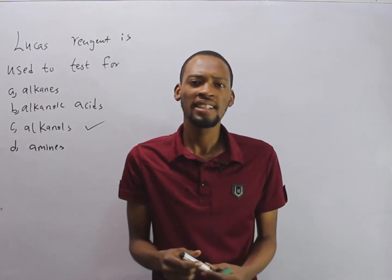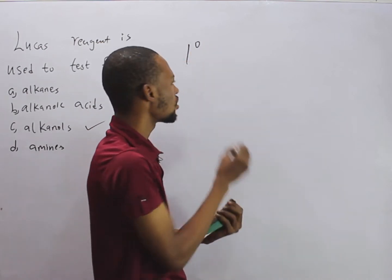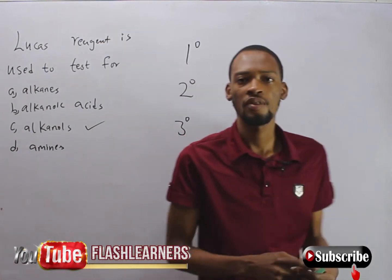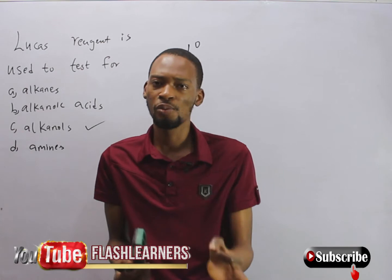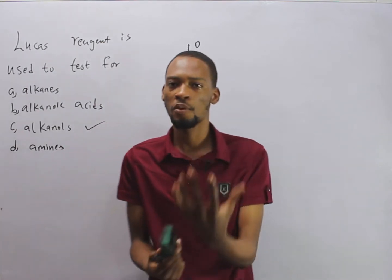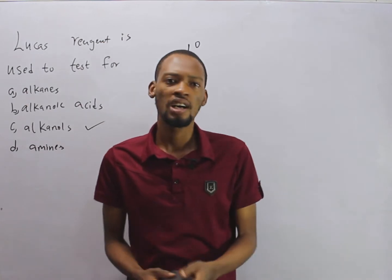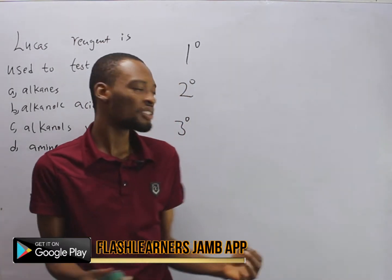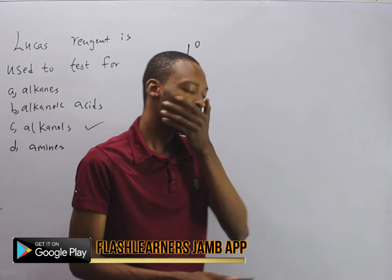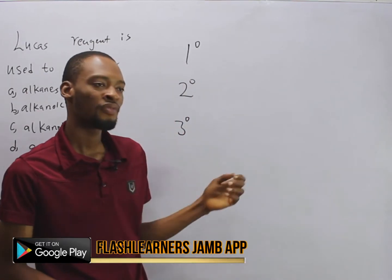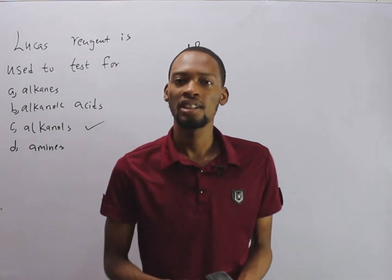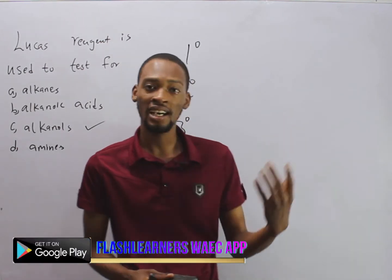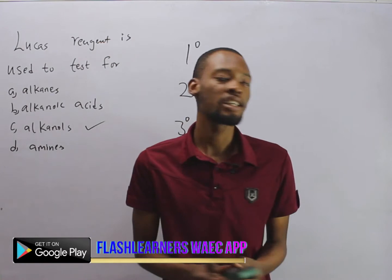Talking about alcohols, we have primary alcohols, secondary alcohols, and tertiary alcohols, based on the position of the functional group. If the hydroxy functional group is on carbon one, that is a primary alcohol. If the carbon carrying the functional group has two other carbons directly connected to it, that is a secondary alkanol. An alkanol with three carbons directly attached to the carbon carrying the hydroxy functional group is a tertiary alcohol.